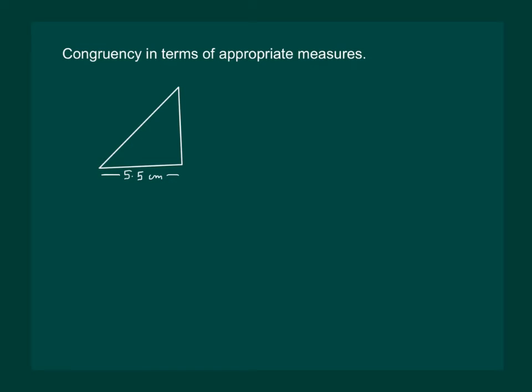Now suppose I give you another information. Say I give you that one of the angles of my given triangle is 65 degrees. Then can we draw a congruent triangle to it?